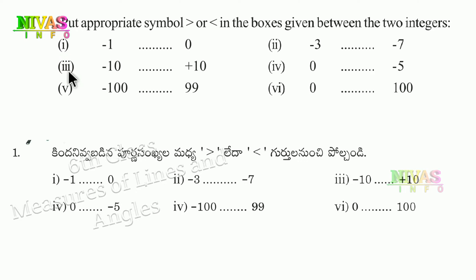So for the first problem: minus 1 and 0. Minus 1 is a small number. On the number line, 0 is to the right of minus 1. The first integer is minus 1. Negative numbers become smaller as they go further from zero. So minus 1 is less than 0.